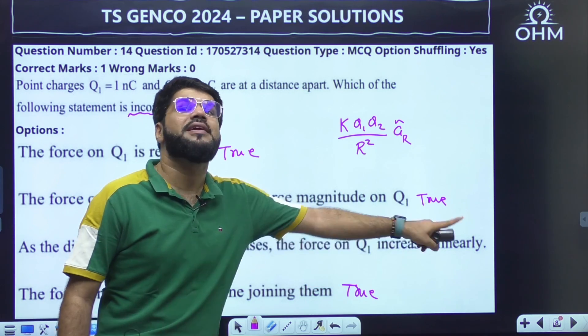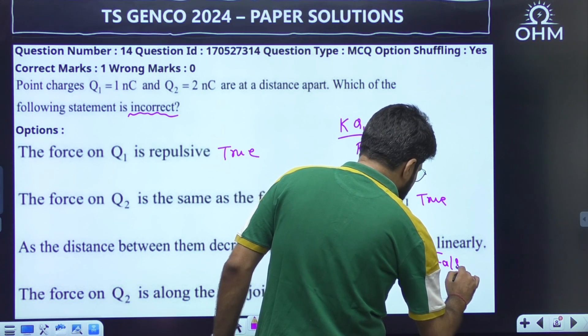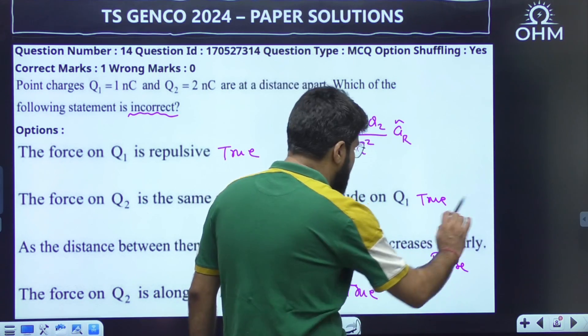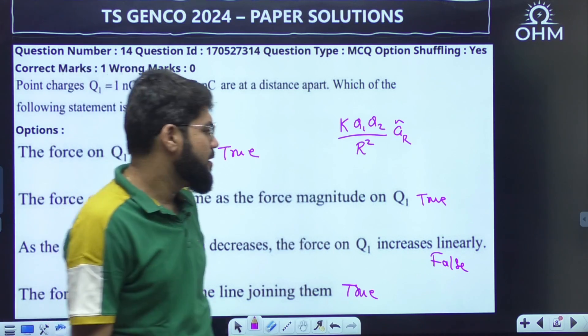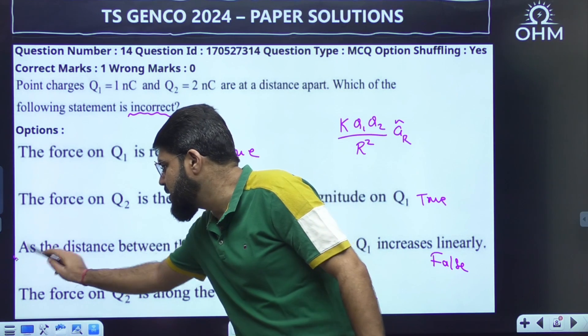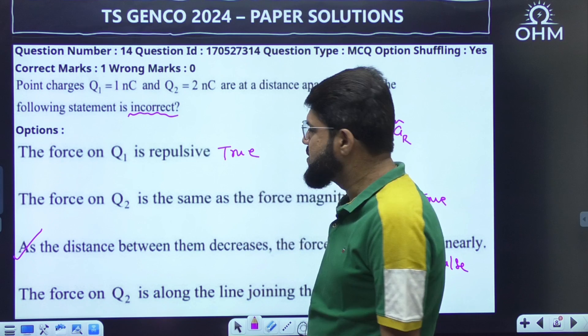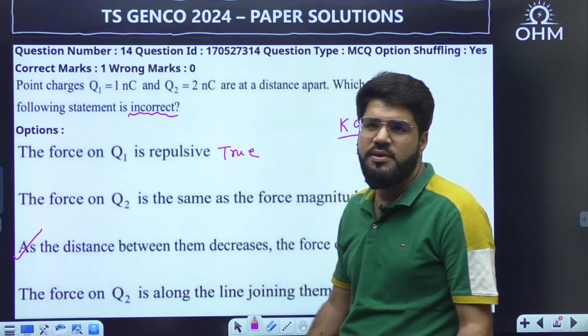So that is why the statement goes false. It increases definitely, they are inversely related, but not linearly. It's a square relation. F is proportional to 1 by R square. So option number C is false. We need to choose the incorrect answer, option number C is the correct one. This was the third question from EMFT.